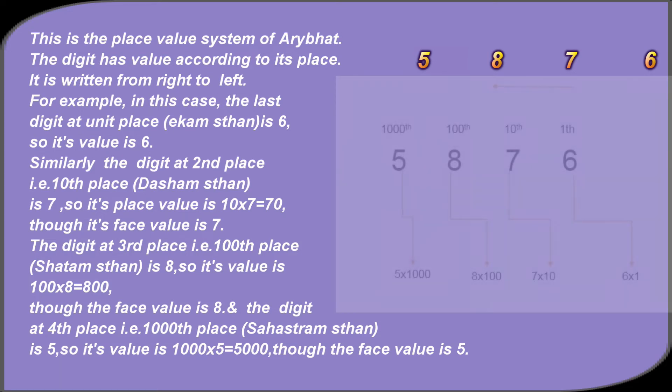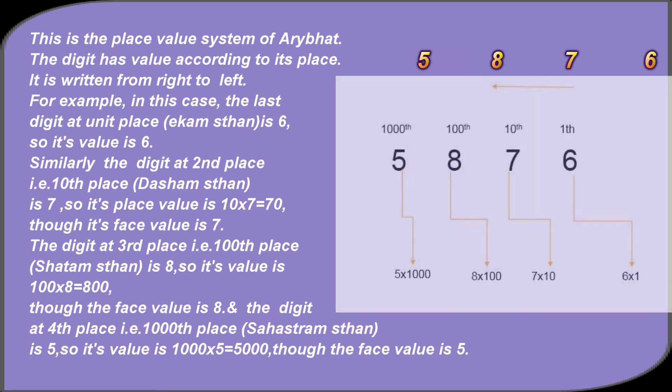This is the place value system of Aryabhata. The digit has value according to its place. It is written from right to left. For example, in this case, the last digit at unit place, ekam sthaan, is 6, so its value is 6. Similarly, the digit at second place, i.e. 10th place, dasham sthaan, is 7, so its place value is 10 × 7 = 70, though its face value is 7.